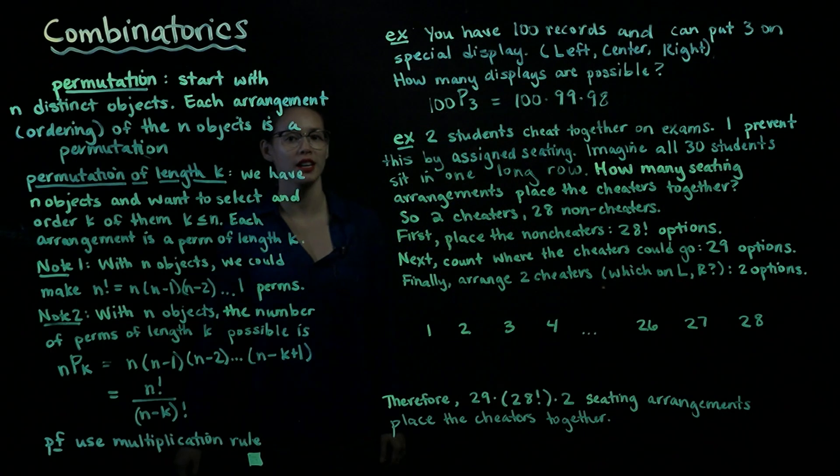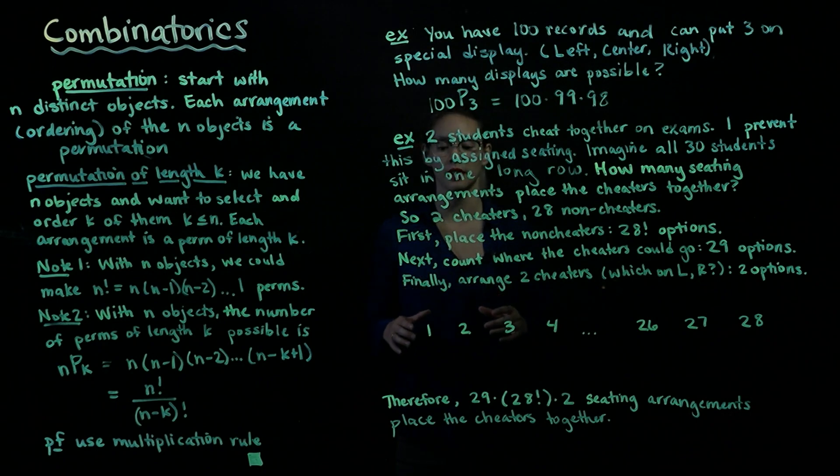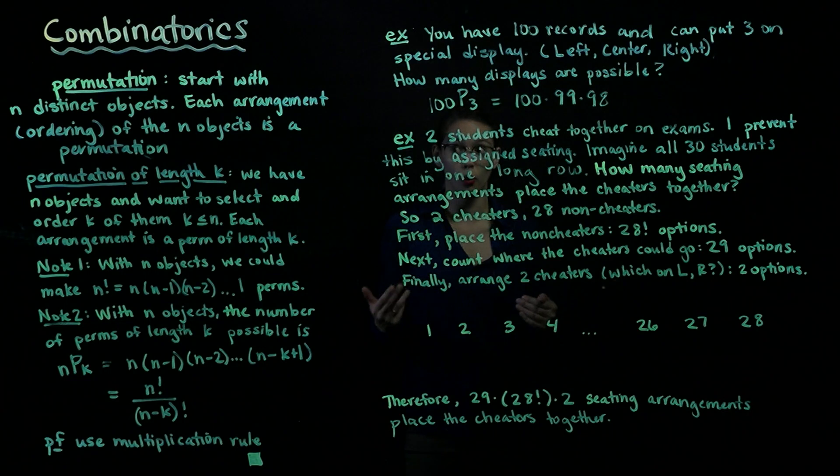In this video, we continue talking about combinatorics and we learn about permutations. So first, what's a permutation? Well, think about starting with n distinct objects and we want to arrange them. Each arrangement or ordering of these n objects is called a permutation.